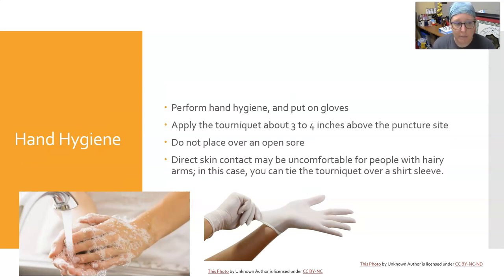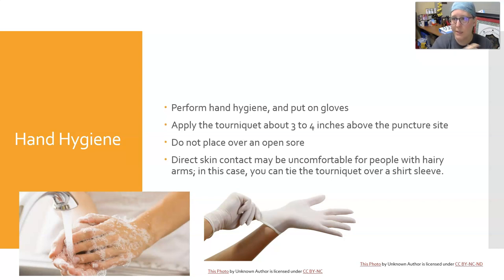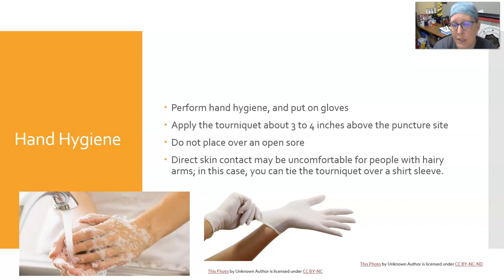Perform hand hygiene — you can do this while greeting the patient if the sink is nearby. Once hand hygiene is performed, put on gloves. Apply the tourniquet about three to four inches above the puncture site, which is usually the antecubital fossa. Don't place the tourniquet over an open sore or pinch any IV lines. Direct skin contact may be uncomfortable for patients with hairy arms — in that case, you can tie the tourniquet over a shirt sleeve. If a blood pressure cuff is on that arm, remove it but remember to put it back on.